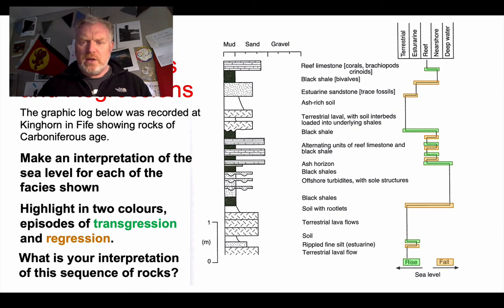And you can see the movements to the right showing a fall in sea level, movements to the left showing a rise in sea level. So what does this tell us then about the Carboniferous? Clearly it's a time of rapidly fluctuating sea levels. Within only a few meters of the sequence we're seeing a lot of sea level change.